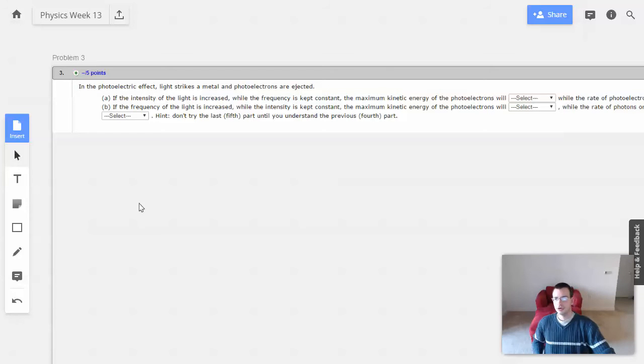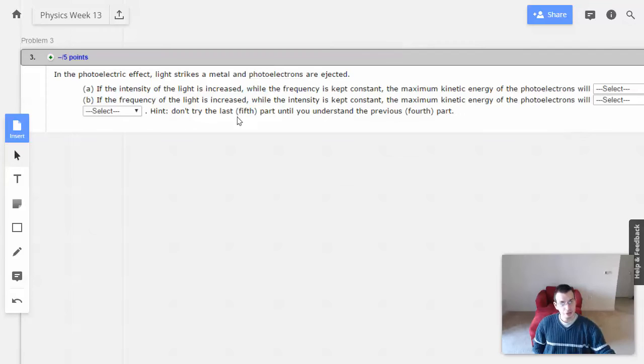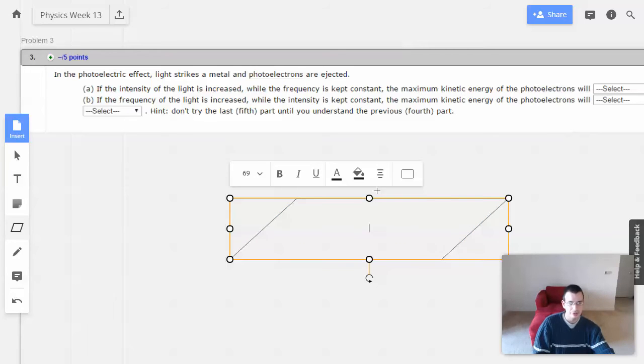Week 13, problem 3. In the photoelectric effect, light strikes a metal and photoelectrons are ejected. If the intensity of light is increased while the frequency is kept constant. Okay, so let's go over the photoelectric effect real quick. I'm going to draw myself a parallelogram.